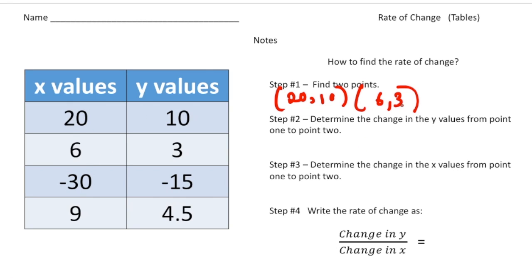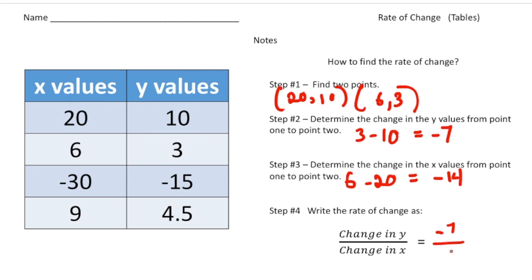Step two: determine the change in y-values. 3 minus 10 gives a change of negative 7. Step three: the change in x-values — 6 minus 20 gives negative 14. Writing that as a ratio: negative 7 over negative 14 reduces to positive one-half. So the rate of change of this function is one-half. You can verify: to go from 6 to 3 you multiply by one-half, and from negative 30 to negative 15 you also multiply by one-half.